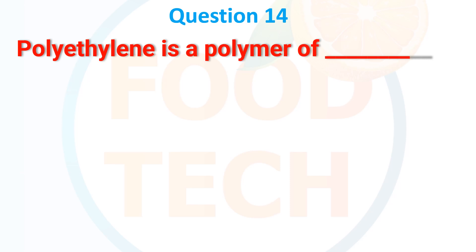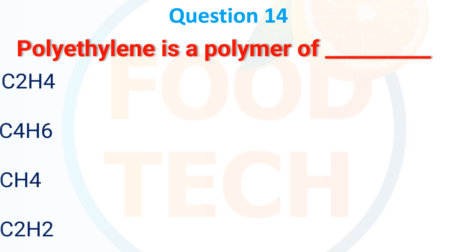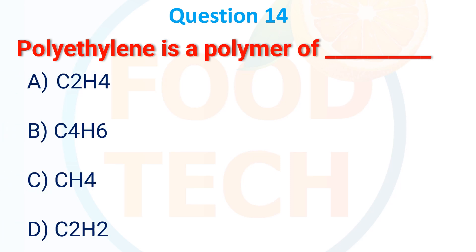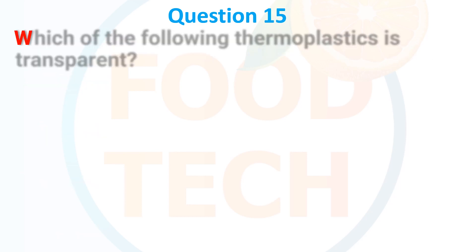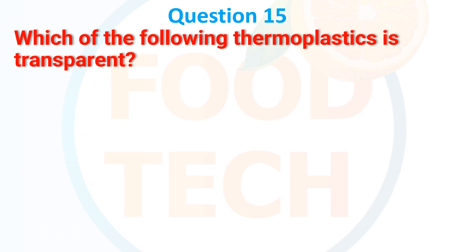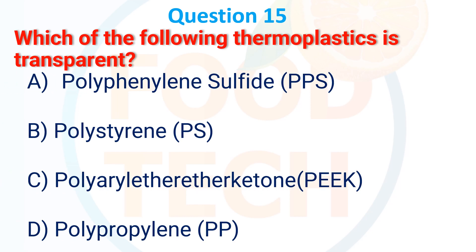Polyethylene is a polymer of: A) C₂H₄O, B) CH₄H₆, C) CH₄, D) C₂H₂. The answer is C₂H₄. Which of the following thermoplastics is transparent?